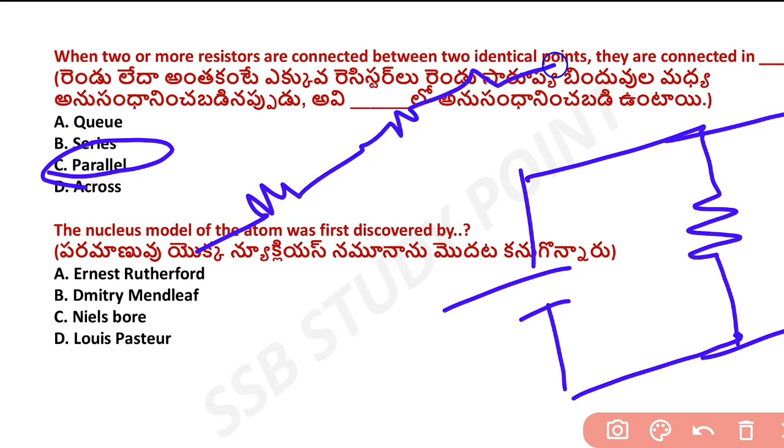In a series connection, components are in a single line. When connected between two identical points, it is a parallel connection.